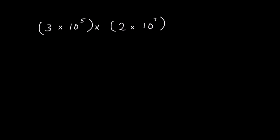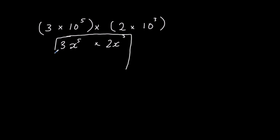Here we're being asked to multiply two numbers that are written in standard form. It's a bit like the question 3x to the power 5 multiplied by 2x to the power 3. What we're doing is looking at the two numbers at the front and multiplying them together. In this case we've got 3 times 2 which is 6, and we've got x to the power of 5 multiplied by x to the power of 3. We multiply by adding the powers, so 5 plus 3 is 8.